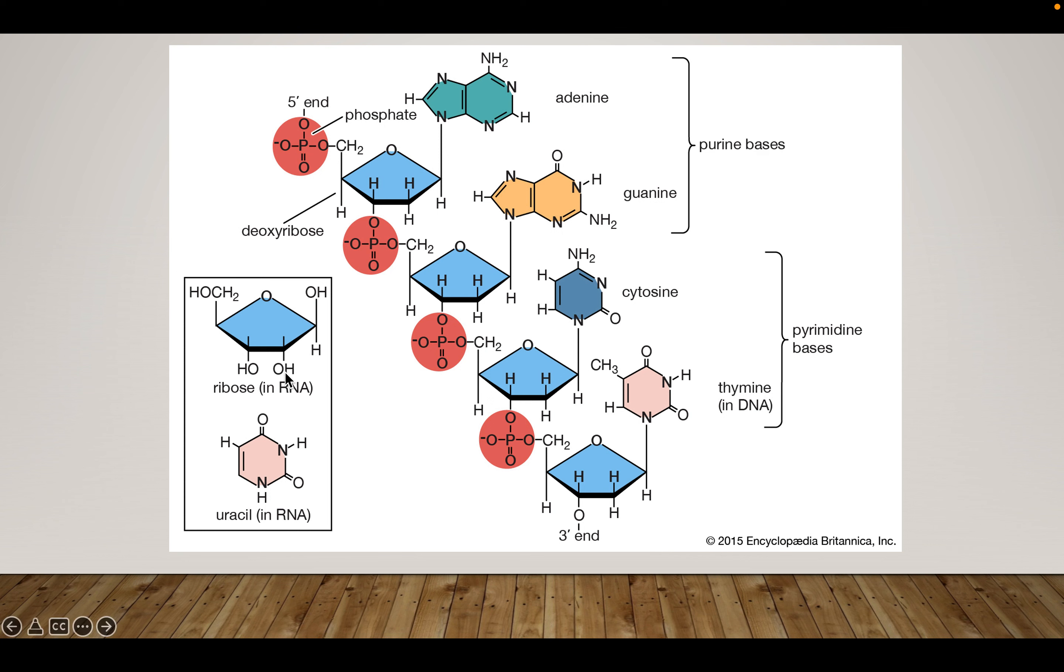If you come over and look at RNA, now you see you have that oxygen there. So instead of deoxyribose, you just call it ribose. Now the other difference with RNA is you swap out thymine and you put in uracil.